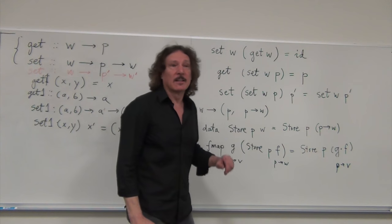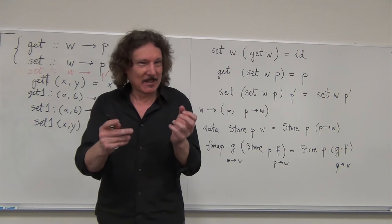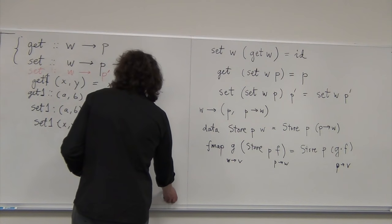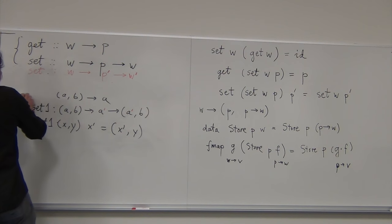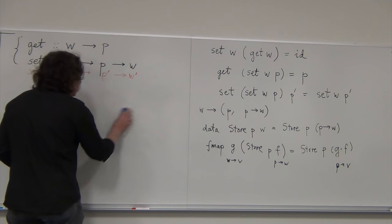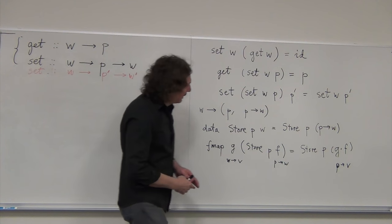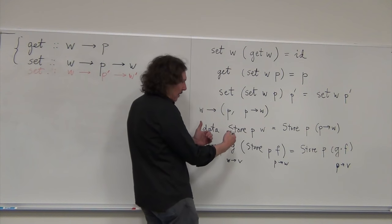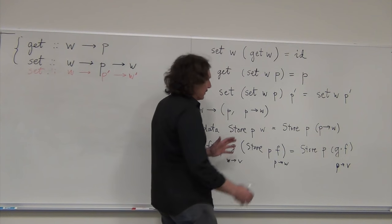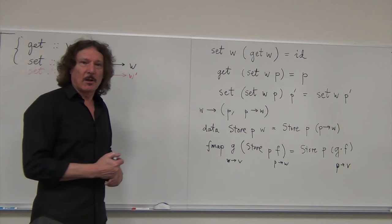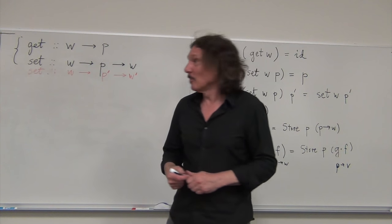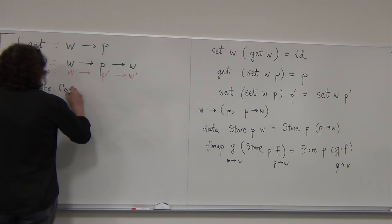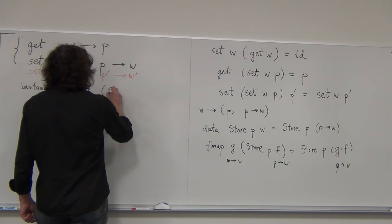If Store is a functor, then our W→Store(W) is a coalgebra. We've caught up with category theory. But there's more: the Store functor is not only the basis for a coalgebra — it's also a comonad. Let's do the instance. `instance Comonad (Store p)` — Store is parameterized by P, which we keep fixed; we're interested in the second argument, in which it's a functor.